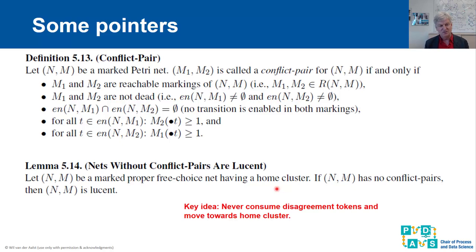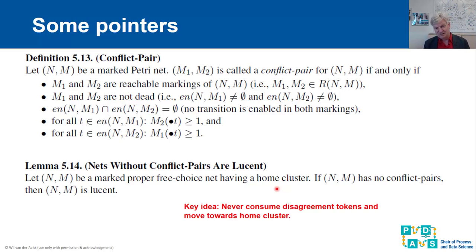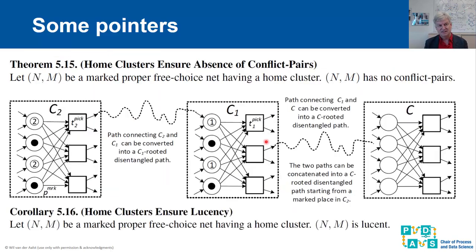How does this relate to lucency? Suppose we have two markings enabling exactly the same set of transitions but they are not equal — there must be places where they disagree. We freeze the disagreement places and fire transitions using only agreement tokens, walking towards the home cluster. At some point this becomes impossible, and the marking where we block is exactly a conflict pair. This connects conflict pairs to lucency via Lemma 5.14.